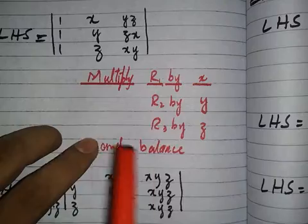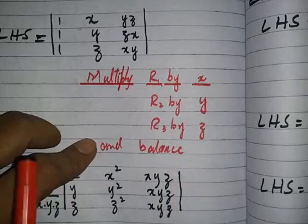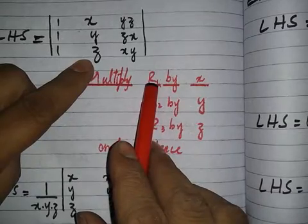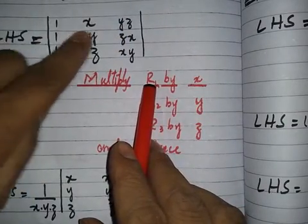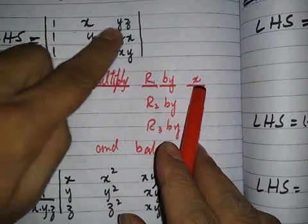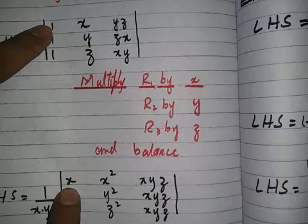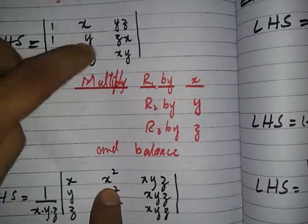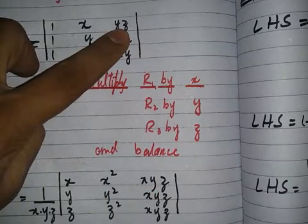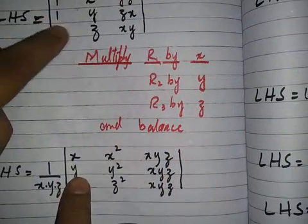By using a determinant property, we multiply row one by x, row two by y, and row three by z, so that we get x-squared, y-squared, z-squared terms. Row one multiplied by x: the element becomes x-squared, and x times x is x-squared. Then y times z multiplied by x becomes xyz. Row two multiplied by y: elements become y, y-squared, and xyz.